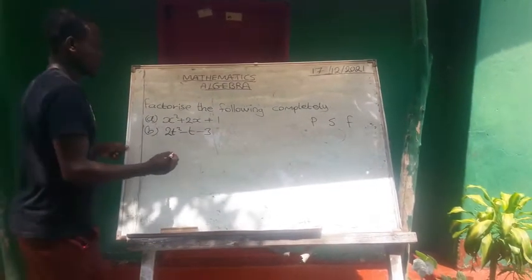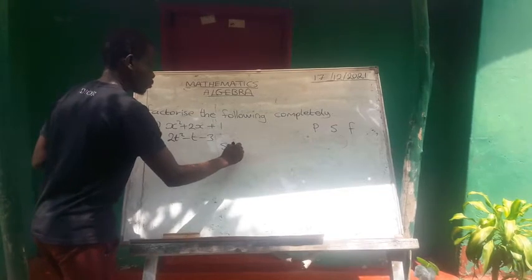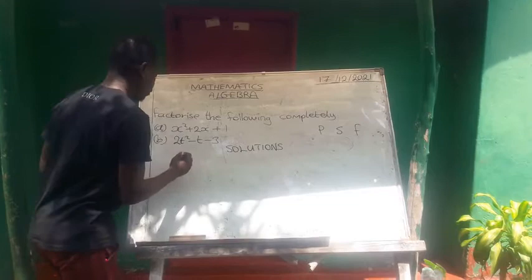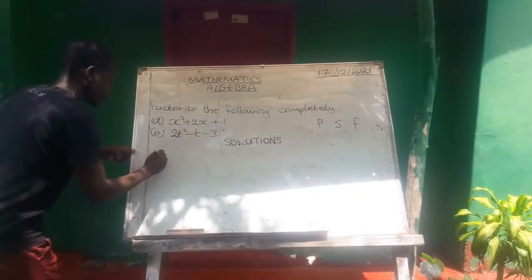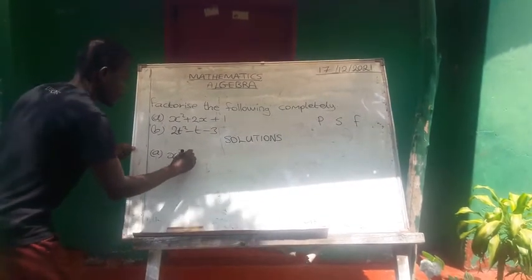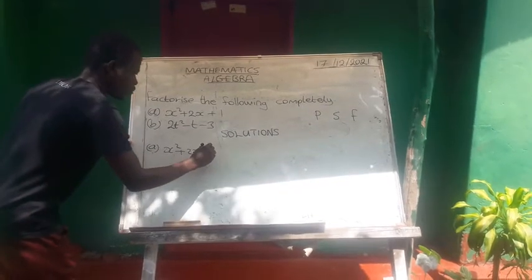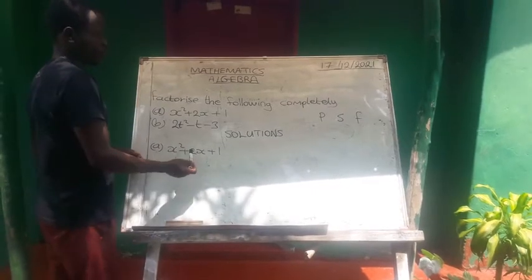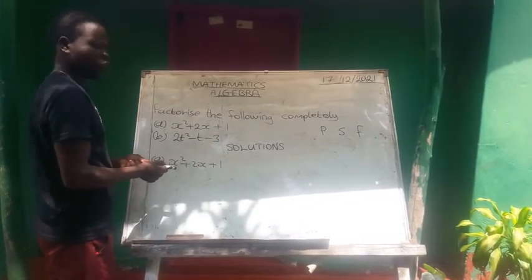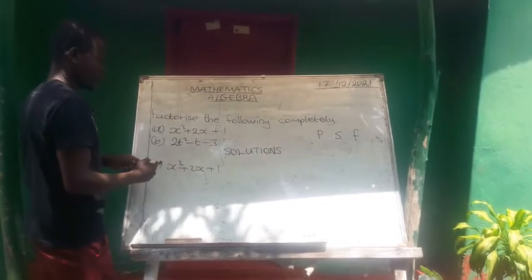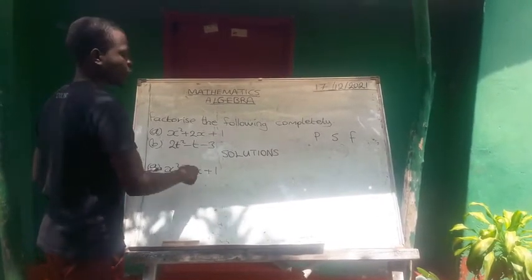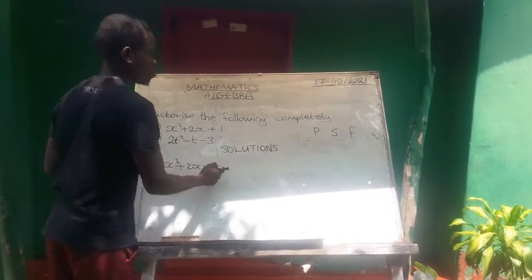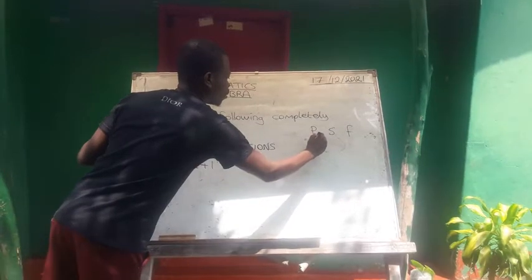So as for question A. In this question, we have to find the product, the sum, and the factor. The product is obtained by multiplying the coefficient of x squared to constant. So x squared, its coefficient, it is 1. So 1 times 1, product is 1.